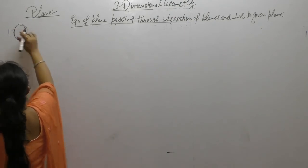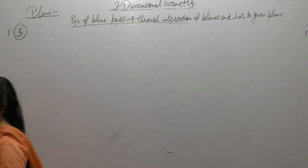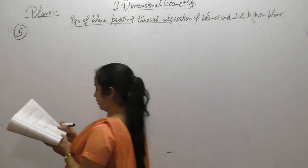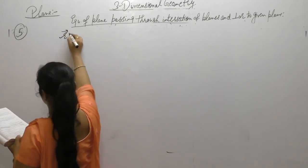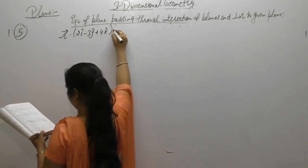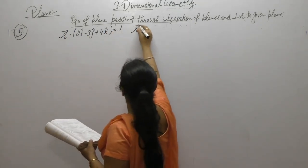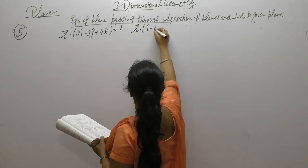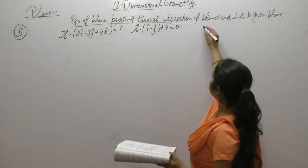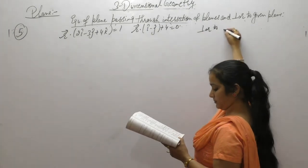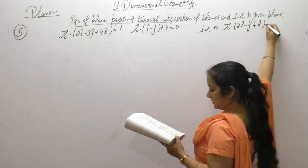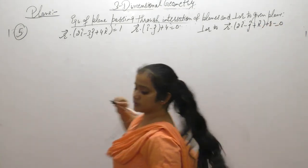Next problem: Find the equation of the plane through the line of intersection of R dot (2i minus 3j plus 4k) equals 1 and R dot (i minus j) plus 4 equals 0, and which is perpendicular to R dot (2i minus j plus k) plus 8 equals 0.